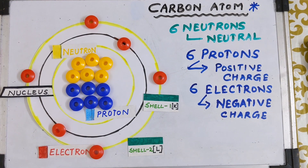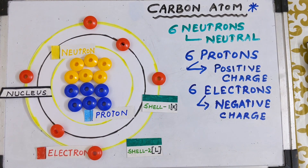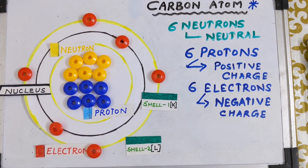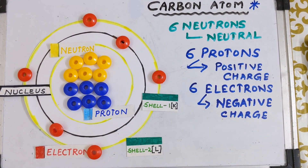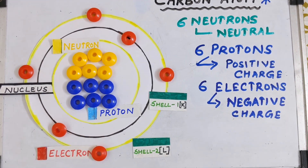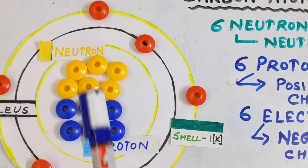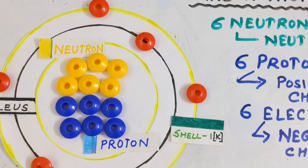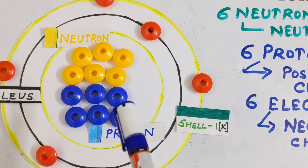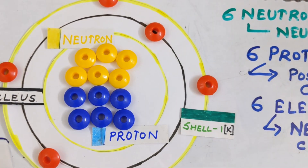Let me explain this with the help of an example. Let's take the case of a carbon atom. Carbon is one atom in which there are six neutrons, six protons, and six electrons. What you see in front of you is the structure of a carbon atom. These yellow colored beads are the neutrons — one, two, three, four, five, and six. These blue colored beads are the protons — one, two, three, four, five, and six. So there are six neutrons and six protons inside the nucleus of the carbon atom.